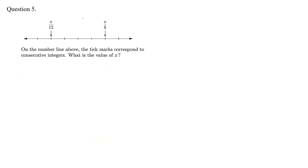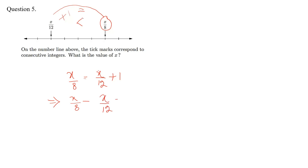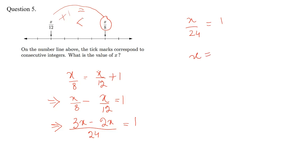The next question: on the number line above, the tick marks correspond to consecutive integers. What is the value of x? This value is obviously greater than this one, and these are consecutive integers. So if we add 1 to the smaller, it equals the larger: x over 8 equals x over 12 plus 1. Rearranging: x over 8 minus x over 12 equals 1. Taking the LCM of 24: (3x minus 2x) over 24 equals 1, giving x over 24 equals 1, so x equals 24.